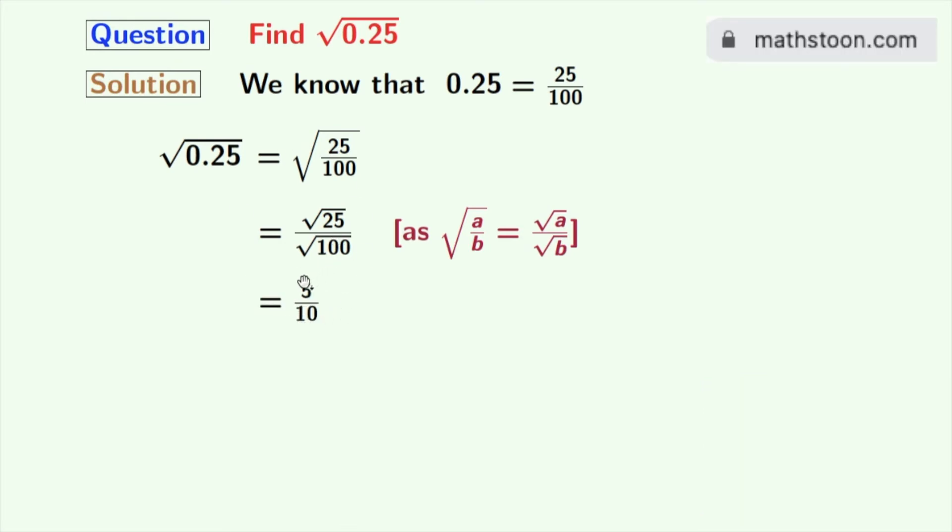Now, we will express this fraction as a decimal number. Doing so, we get 0.5. So finally, we get square root of 0.25 is equal to 0.5 and this comes out as our final answer.